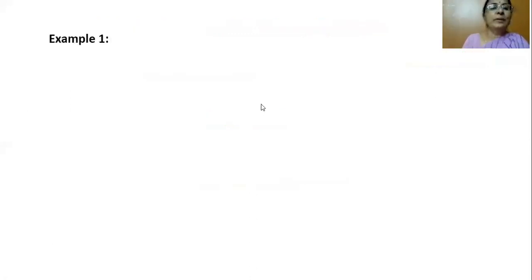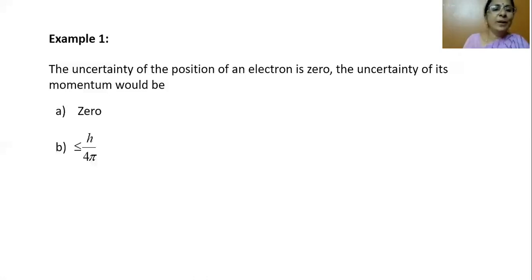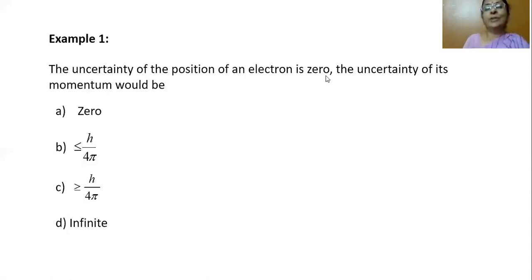Example one: the uncertainty in the position of an electron is zero. What is the uncertainty in its momentum? If one uncertainty is zero, by the uncertainty principle delta X · delta P ≥ h/4π, when delta X is zero, delta P becomes infinity. So the answer is infinite uncertainty in momentum. This example gives a clearer understanding of the principle.